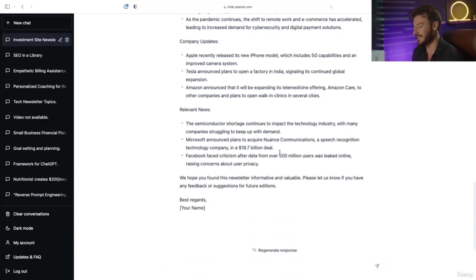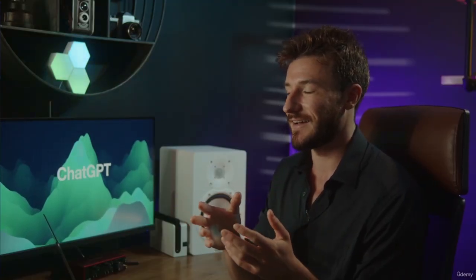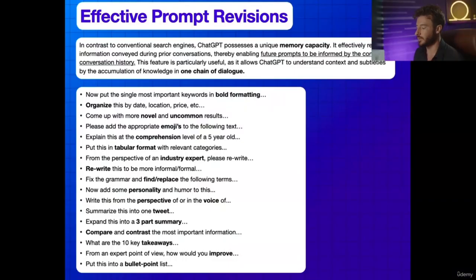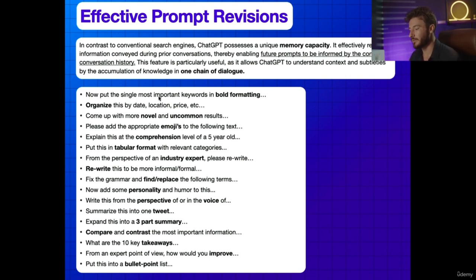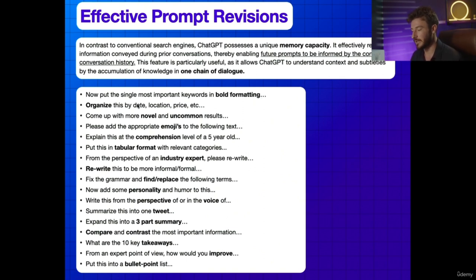Now let's talk about creating effective prompt revisions. Using ChatGPT's memory capacity and chain of dialogue to your benefit: after you get your initial output, follow up with prompts like 'now put the single most important keywords in bold formatting' — it will analyze the output and bold those keywords. Another follow-up: 'organize this by date, location, and price,' which continues to build iteratively on your previous output.